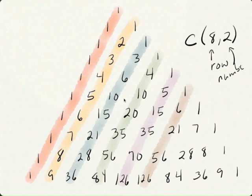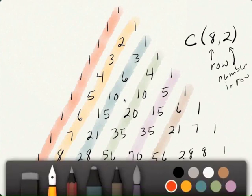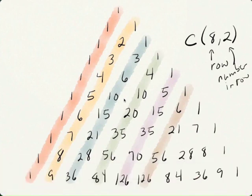The first number will tell you the row the solution can be found, and then the second number will tell you the number in the row where the solution is. So, starting from the top, the first row is 0, and then going down 1, 2, 3, 4, 5, 6, 7, 8.